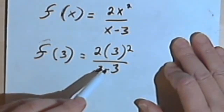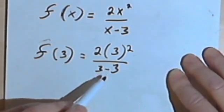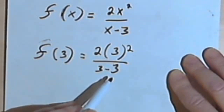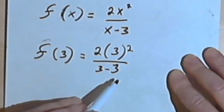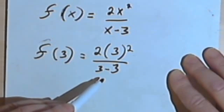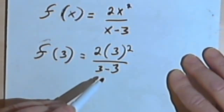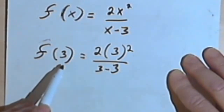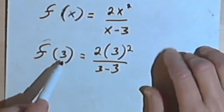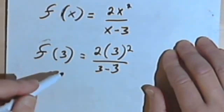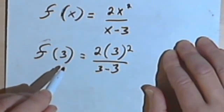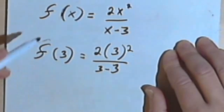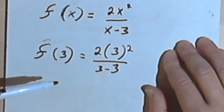But if I take a good look at it, I can save myself some work. Look at the denominator, 3 minus 3. Well, 3 minus 3 is 0, and I'm not allowed to have a 0 in the denominator as a denominator of a fraction. So that means I can't evaluate f of 3, and the number 3 would be out of the domain of the function. It would not be part of the function because I can't put a 3 into it. I can't have a 3 as my input.